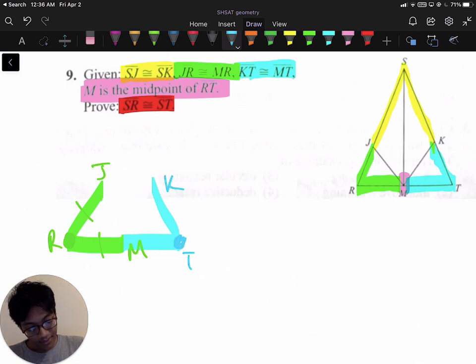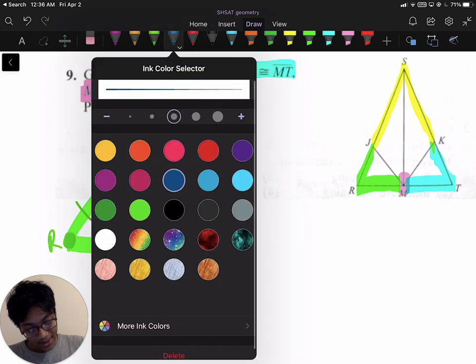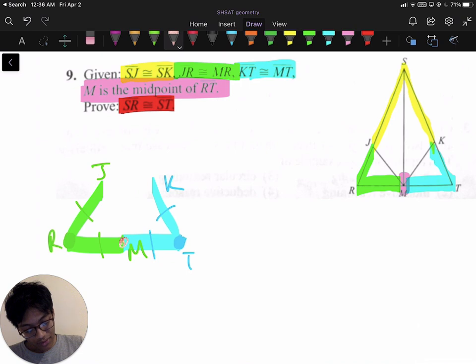So that means this side is congruent to this side. So hopefully everything makes sense so far. Here's what you can do. You can show, because this point right here, that's M, that's point M, that's the midpoint of this side.